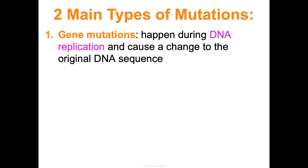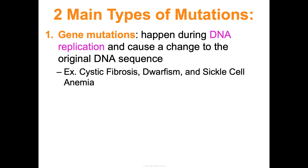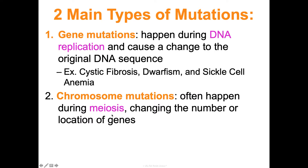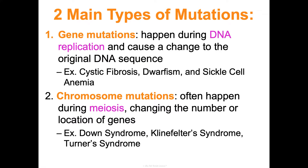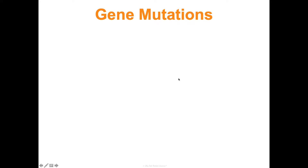We'll divide mutations into two broad categories: gene mutations and chromosome mutations. A gene mutation often happens during DNA replication and causes a change to the DNA sequence for just one gene. Examples include cystic fibrosis, dwarfism, and sickle cell anemia. A chromosome mutation often happens during mitosis and changes the number or location of multiple genes, affecting an entire chunk or an entire chromosome — causing disorders like Down syndrome, Klinefelter, and Turner syndrome.